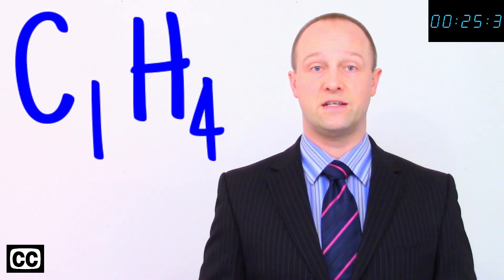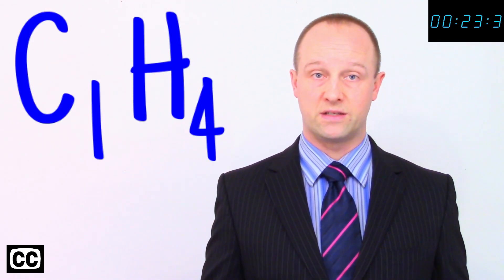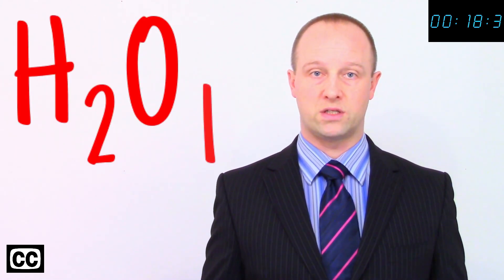We place numbers immediately after each letter to tell us how many atoms of that element are present, but if the number is one, we don't bother writing it. For example, H2O means two hydrogens and one oxygen.